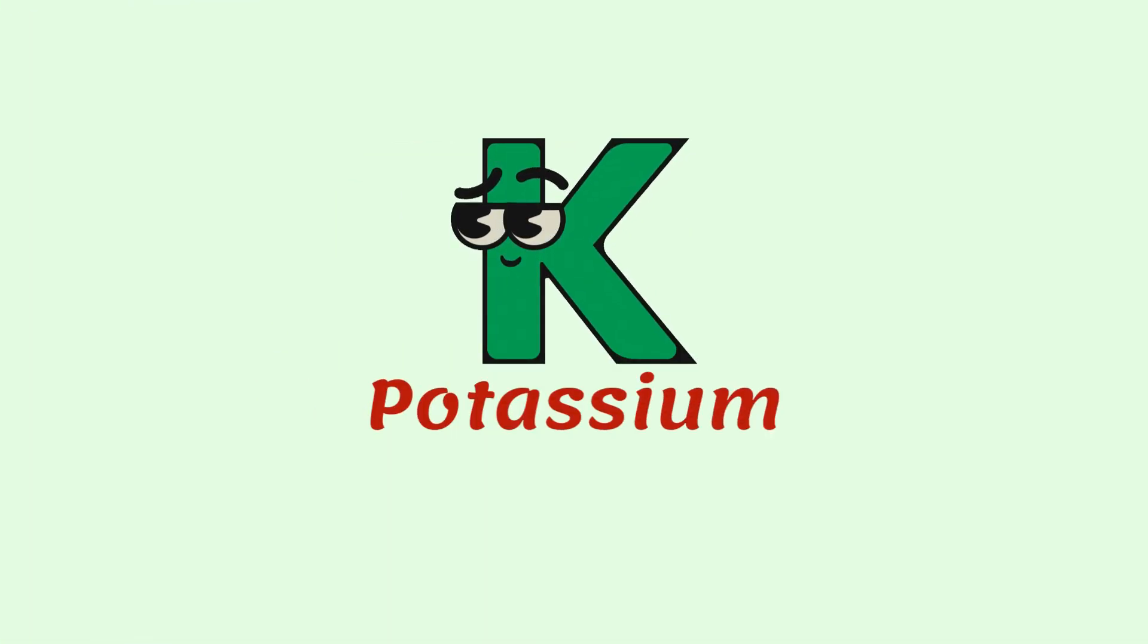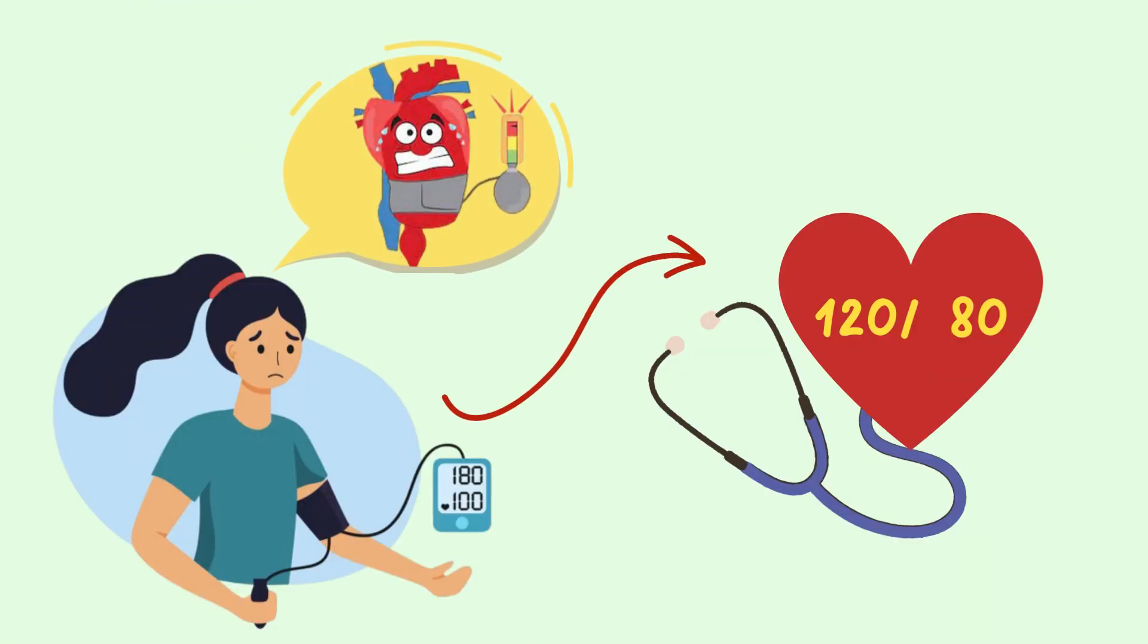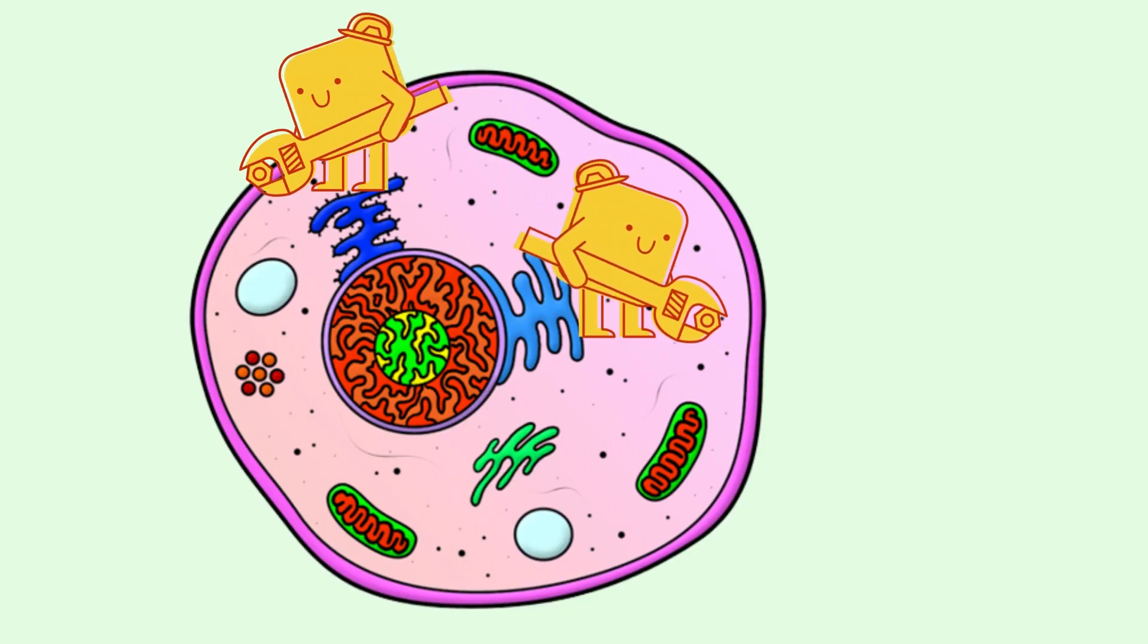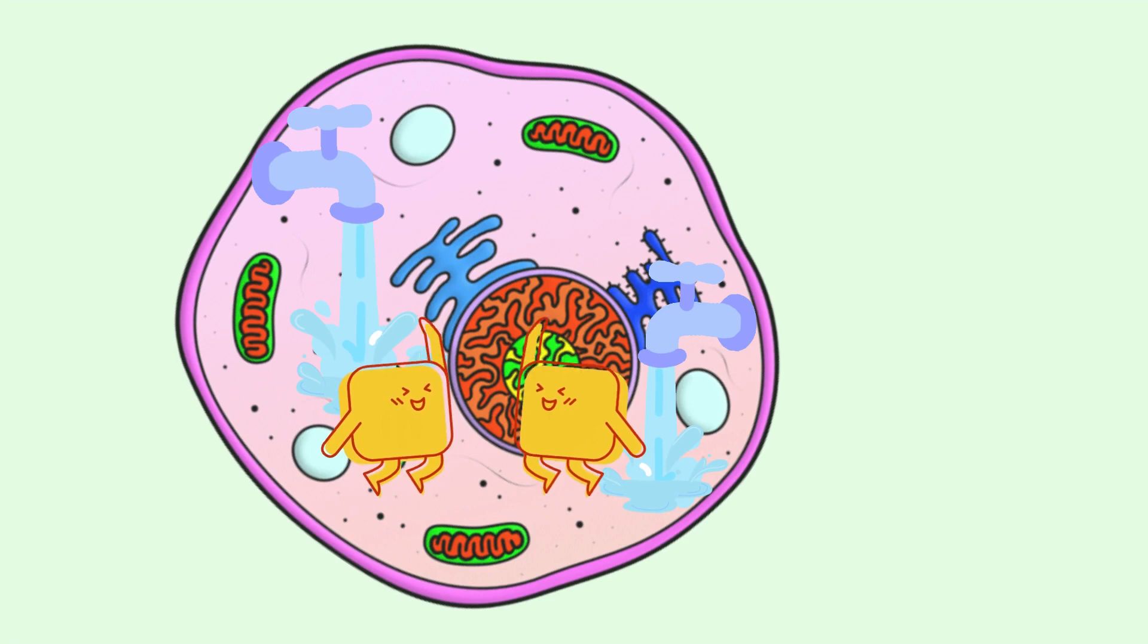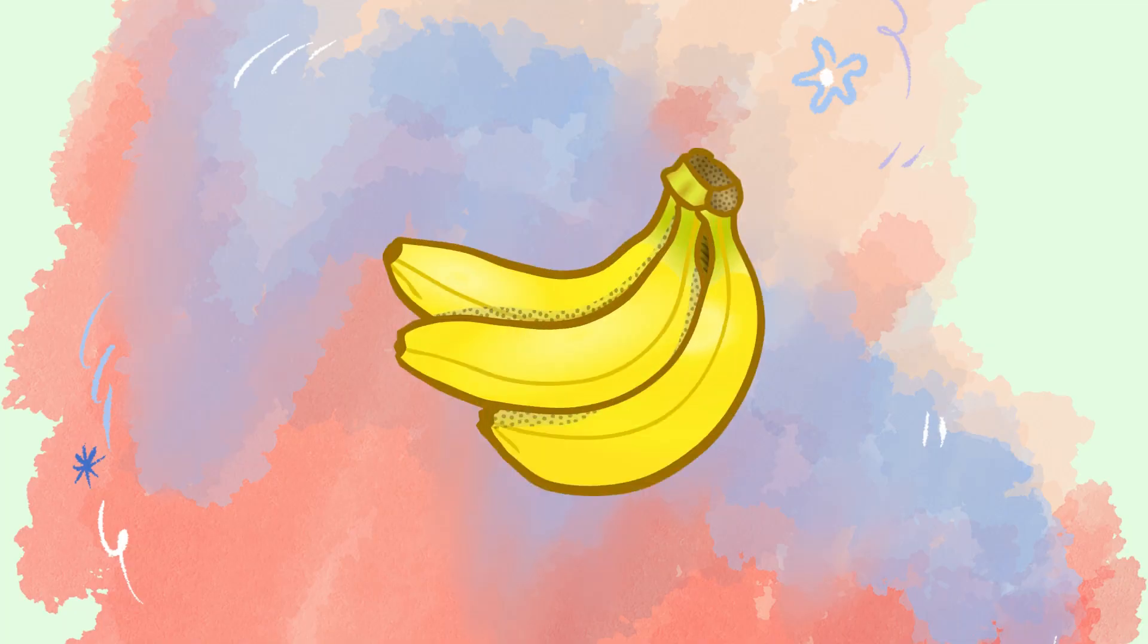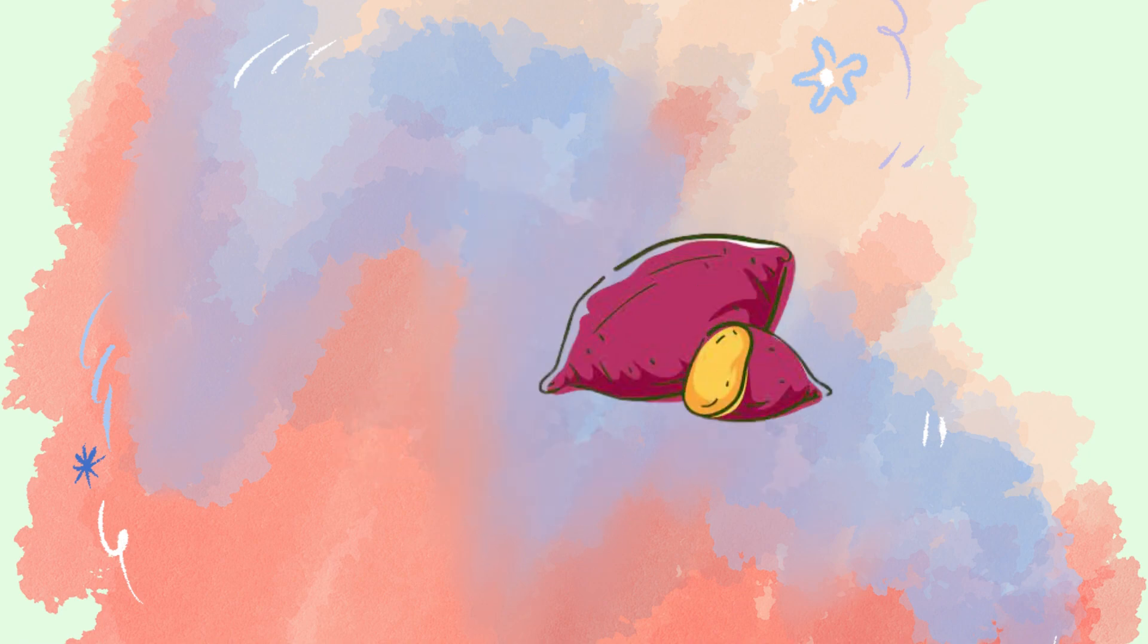Potassium is also a very important mineral, as it helps in normalizing blood pressure. Its main role in the body is to help maintain normal levels of fluid inside our cells. Potassium is present in many foods. Bananas, prunes, potatoes, and sweet potatoes are a few examples.